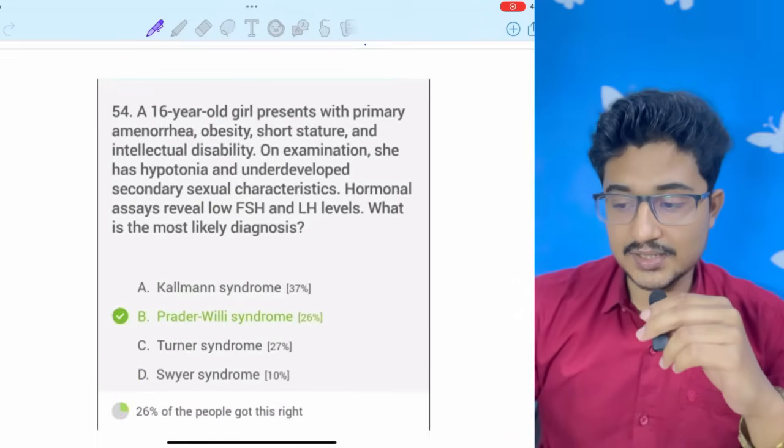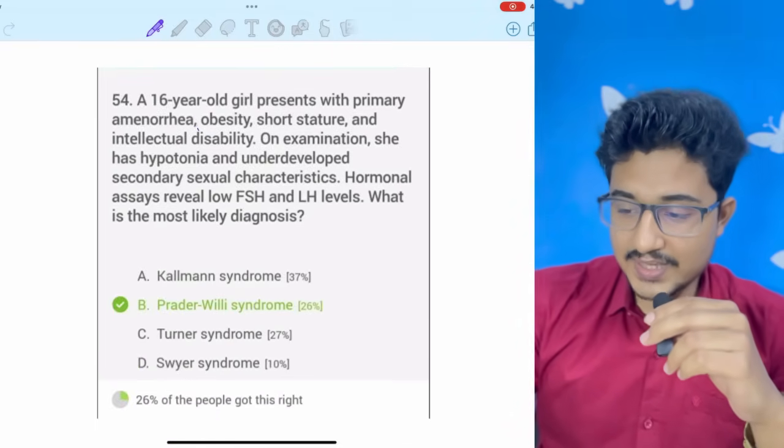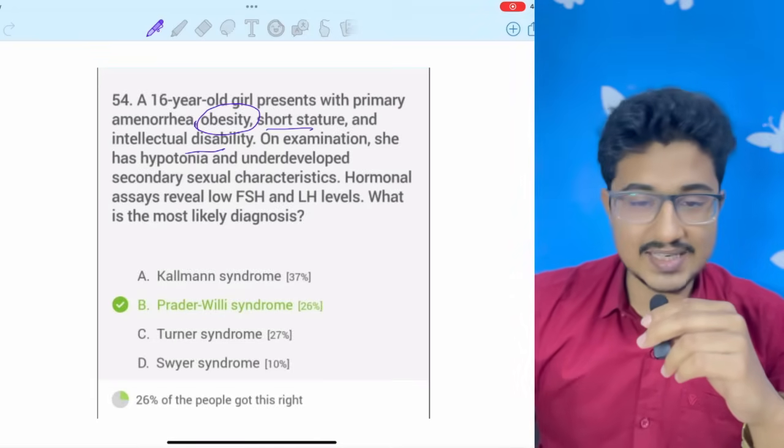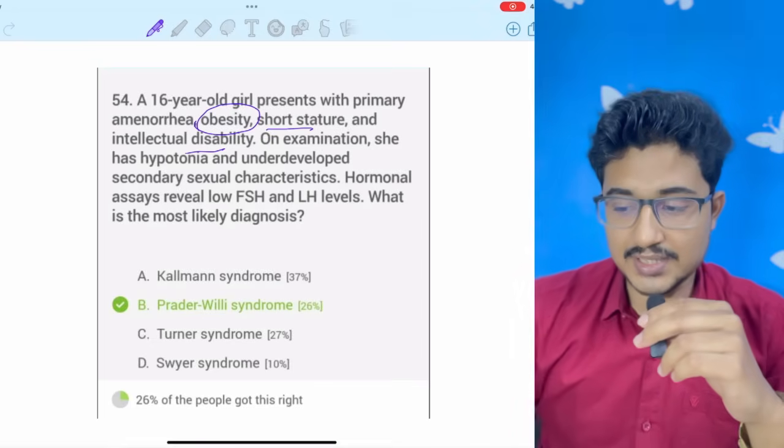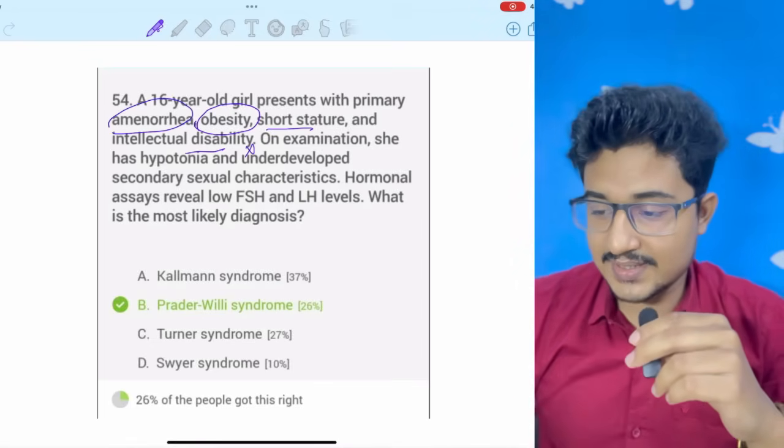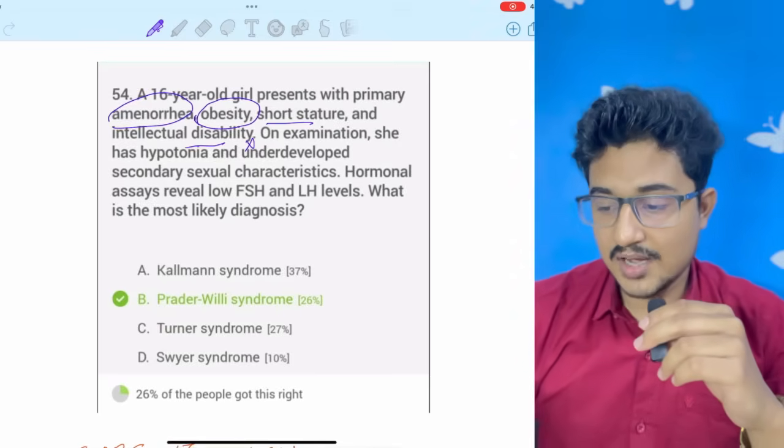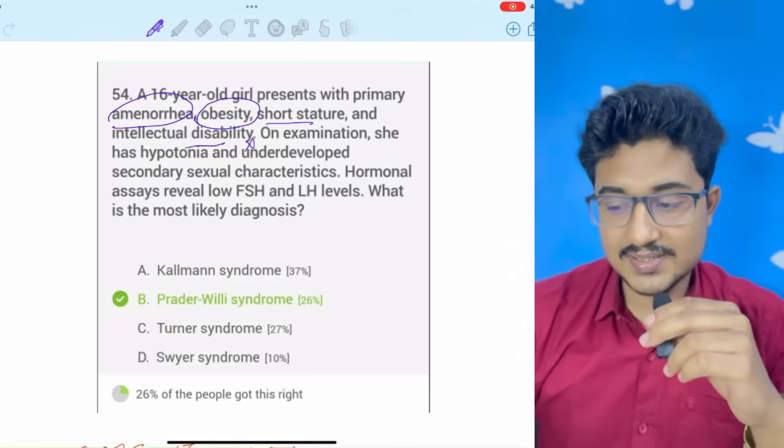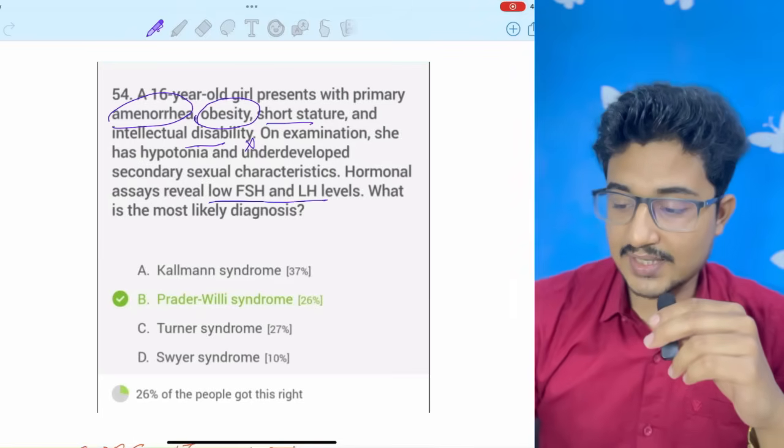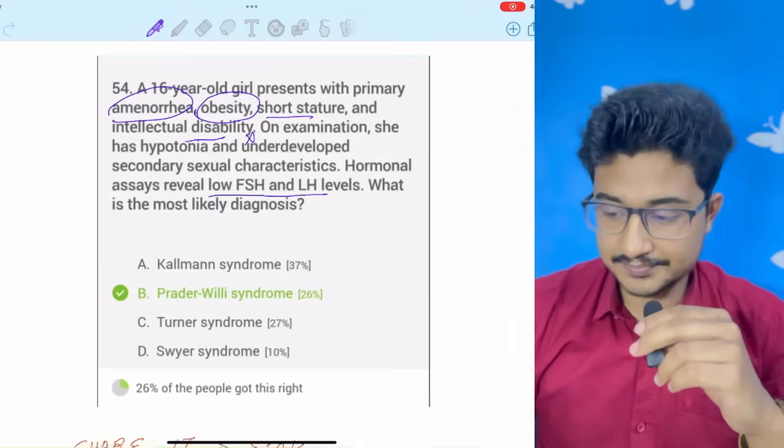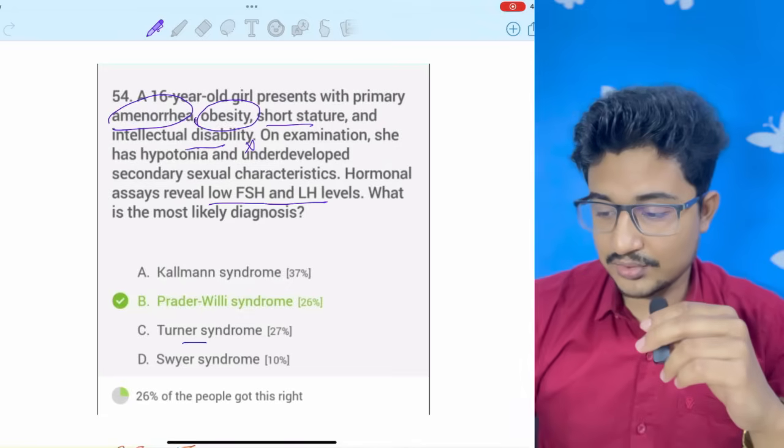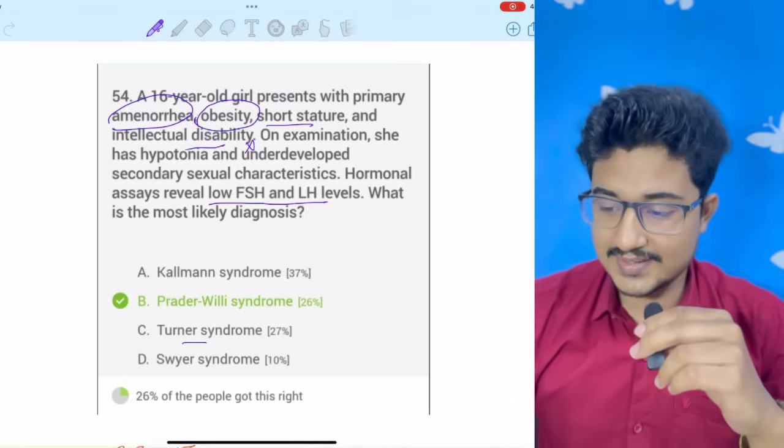A 16-year-old girl presents with primary amenorrhea, obesity. Okay. Obesity, short stature, intellectual disability. Many diseases we see, intellectual disability. So, this is not a pointer. Amenorrhea is a pointer. Obesity is a pointer. On examination has hypotonia, underdeveloped secondary sexual characteristic, hormonal, low FSH and LH level. What is the most likely diagnosis? So, low FSH, LH can be seen in all of the cases more or less. Now, people mostly mark Kallman syndrome. But in Kallman syndrome, what we see is that the olfactory placode is not properly developed due to which anosmia would have been given.